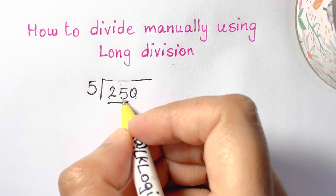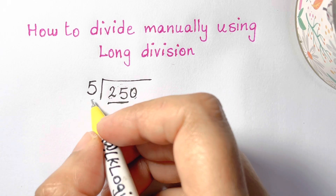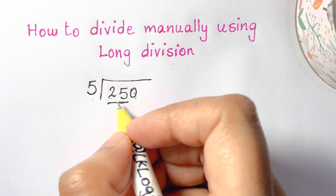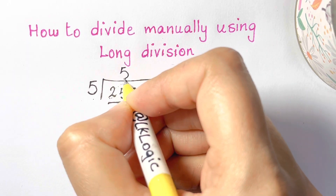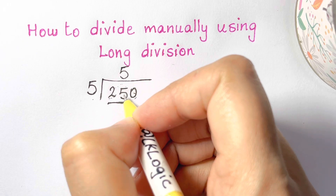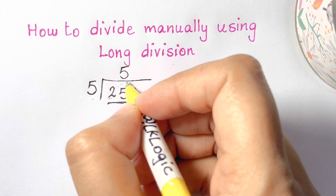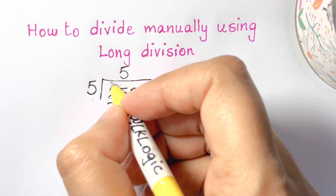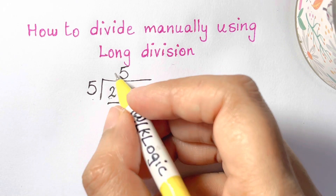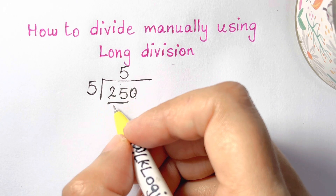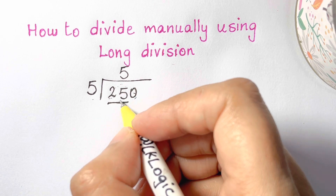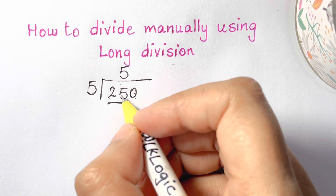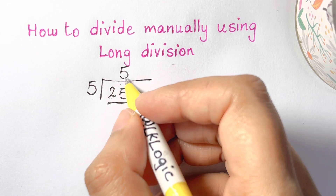Does 5 go into 25? Yes. It goes in 5 times. So we put that 5 right above the 5. Make sure you don't put it above 2, because 5 isn't going into 2 — it goes into 25 as a whole. So we put it over 25 as a whole.